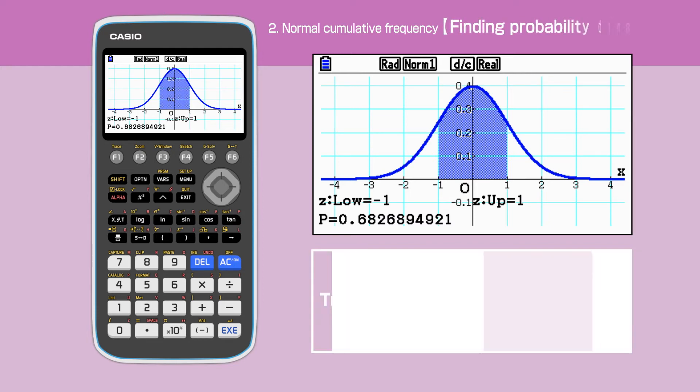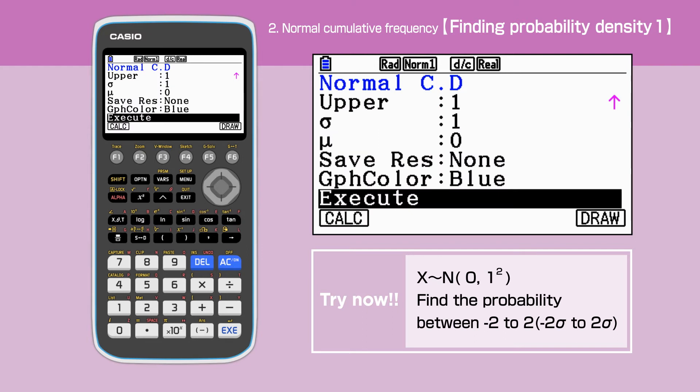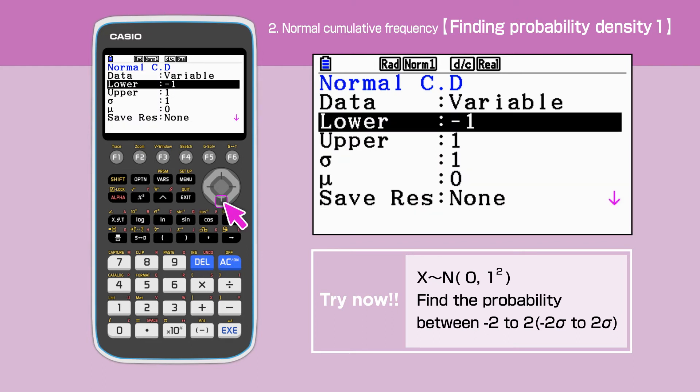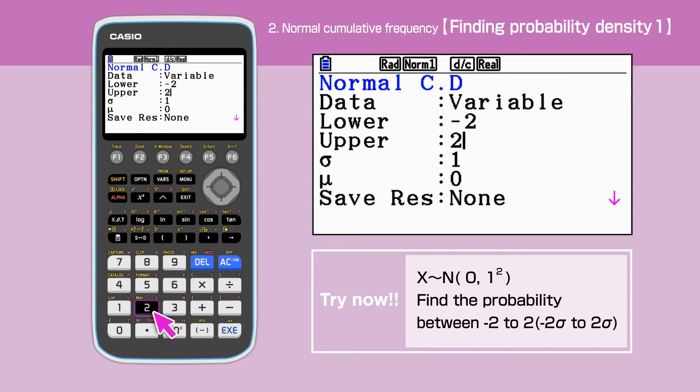Next, we are calculating the probability between standard deviation of minus 2 and 2. Press Exit to go back to the screen to enter minus 2 for lower and 2 for upper boundaries.